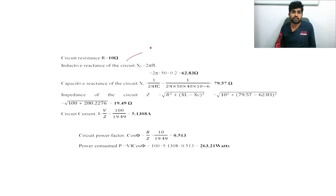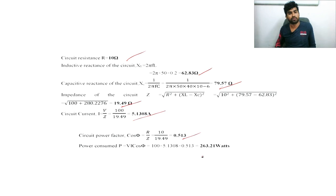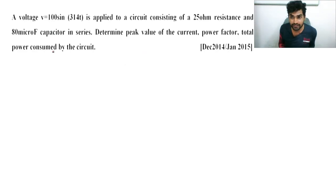Summary of Problem 1: resistance is given, XL = 2πfL = 62.83 ohm, XC = 79.57 ohm, impedance Z = 19.49 ohm, current I = 5.130 amps, power factor cos φ = R/Z = 0.513, and power = 263.21 watts.